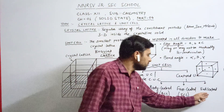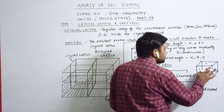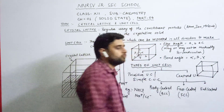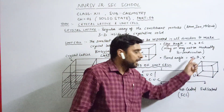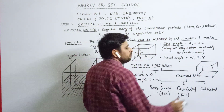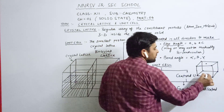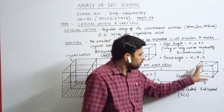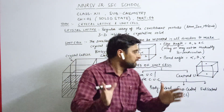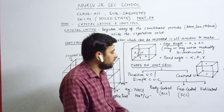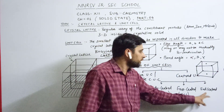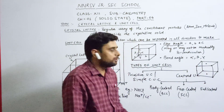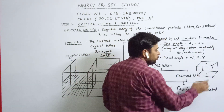Another type is the end-centered cubic unit cell. In this, eight constituent particles are present at the corners, and two atoms are present at the centers of two opposite faces.